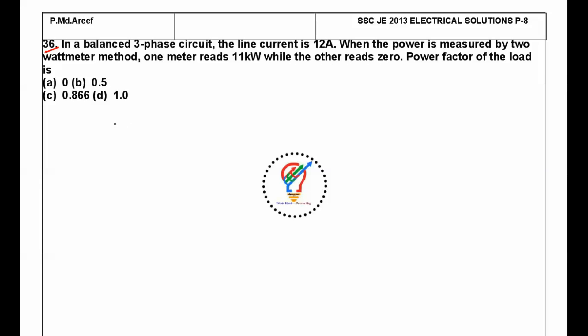The power factor of the load is to be found. As we've seen in my previous SSC JE solutions, for all these kinds of problems, W1 is proportional to cos(30° - φ), that's the wattmeter reading of 1, and W2 is proportional to cos(30° + φ).